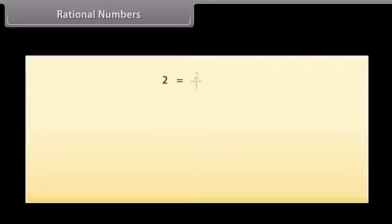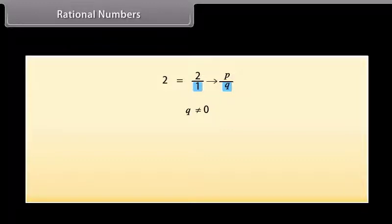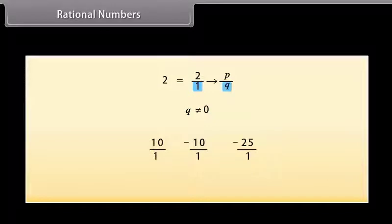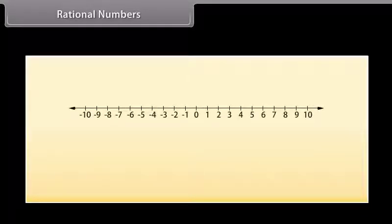Is 2 a rational number? Yes, 2 is a rational number because it can be written in the form P by Q, and here Q is 1, which is not equal to 0. In the same way, 10, minus 10, minus 25, etc., are also rational numbers. Therefore, we can say that rational numbers include natural numbers, whole numbers, and integers.